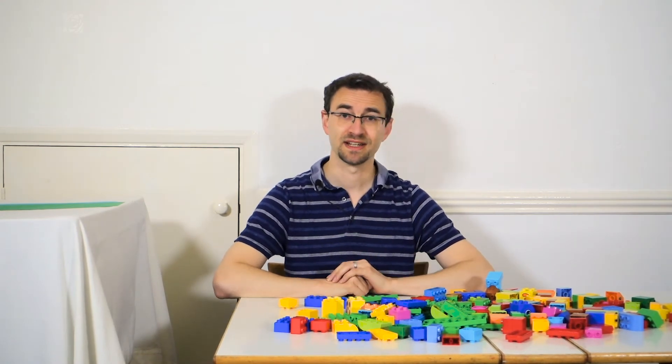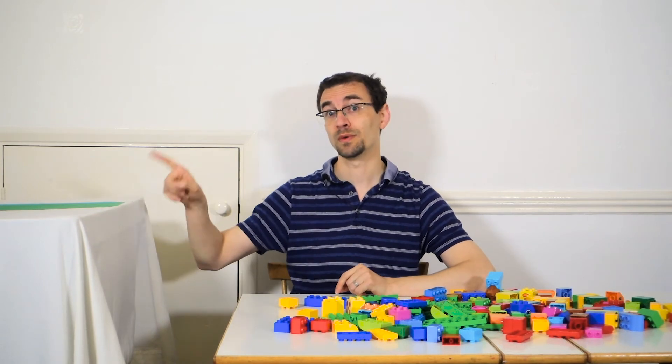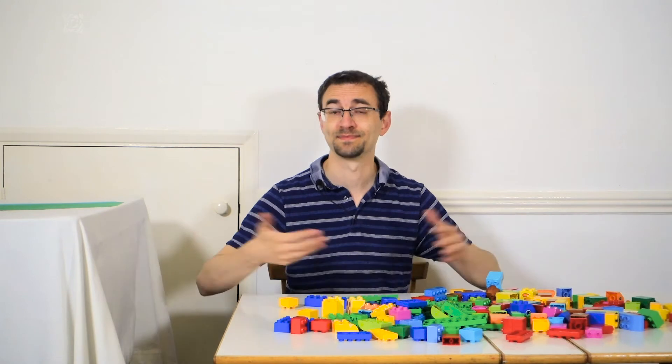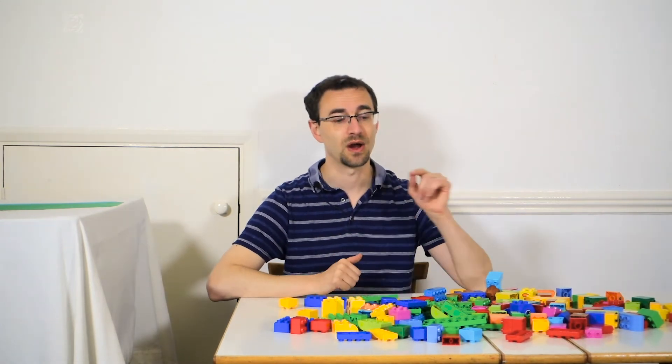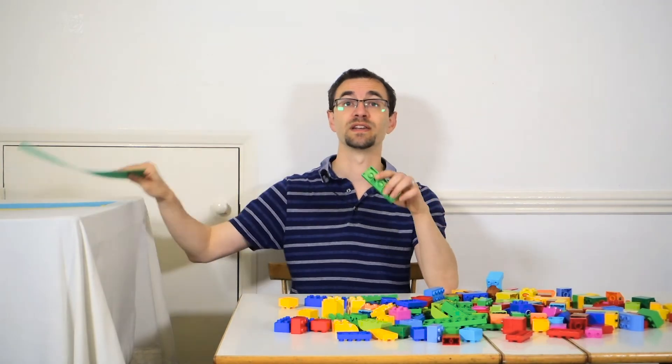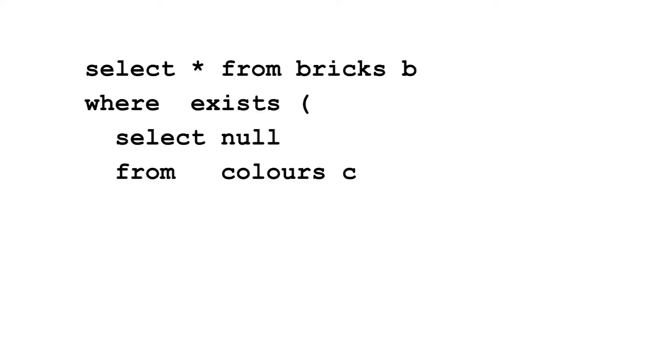But with EXISTS, as long as there's at least one row in the colours table, you'll get all the bricks of every colour. To fix this and only get the bricks that match the colours in the colours table, you need to join the tables inside the subquery.